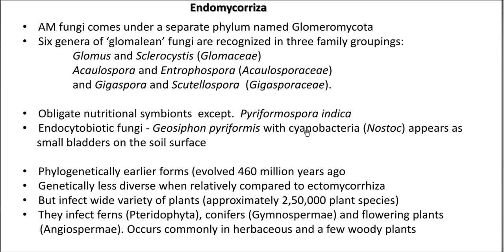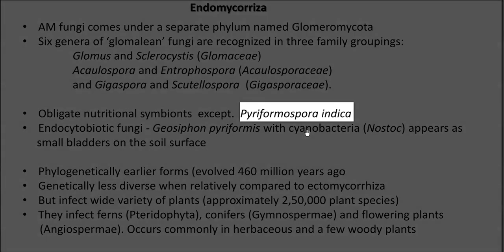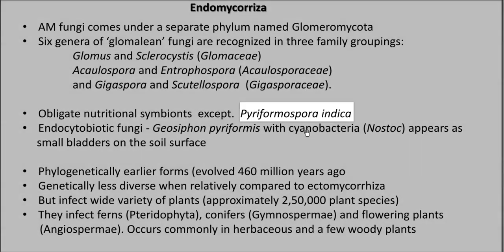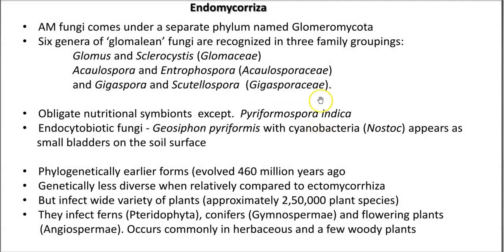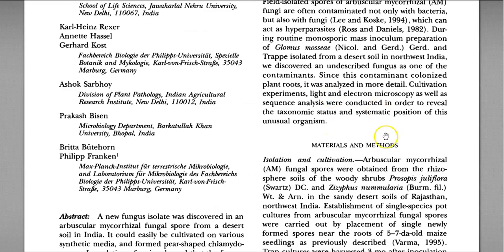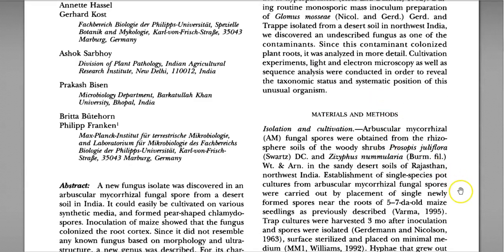Endomycorrhizae are nutritionally obligate in nature, requiring the presence of plants for their survival. They cannot be grown alone on a petri plate. There is an exception for this — that is Piriformospora indica, an endomycorrhiza that has been associated with some plants in the Indian region.